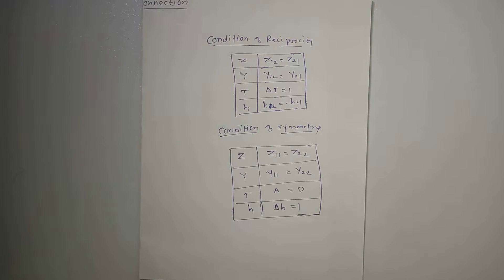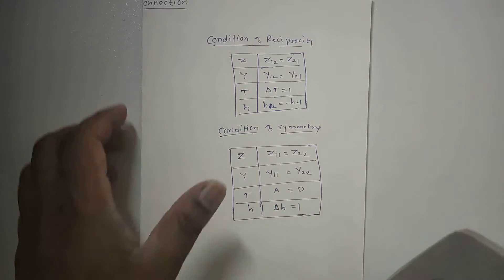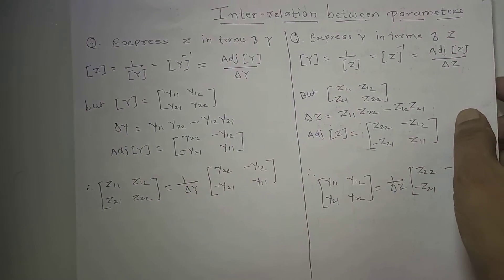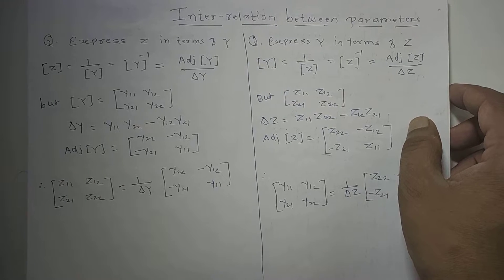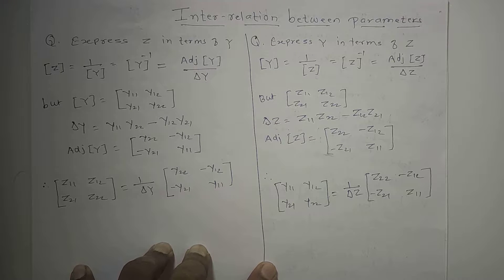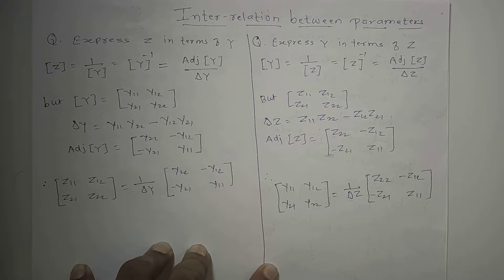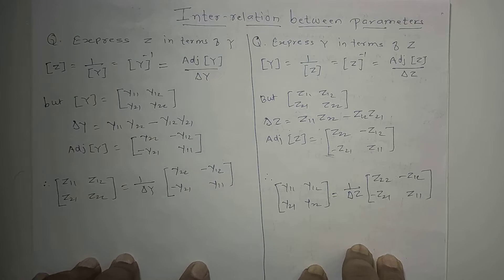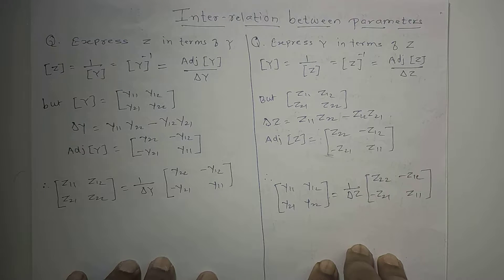The next topic we are going to start is what we call the interrelationship between parameters. What is the use of this interrelationship? If you know one parameter, how do you obtain the other parameters? For example, if you know the z parameter, how do you obtain the y parameter, the ABCD parameter, the h parameter, and so on. Therefore, there is a need to obtain the relationship between these parameters, and that relationship is what we are going to see now.